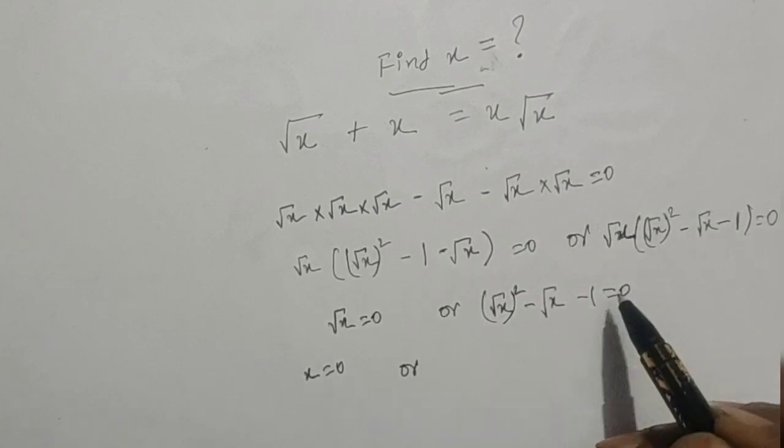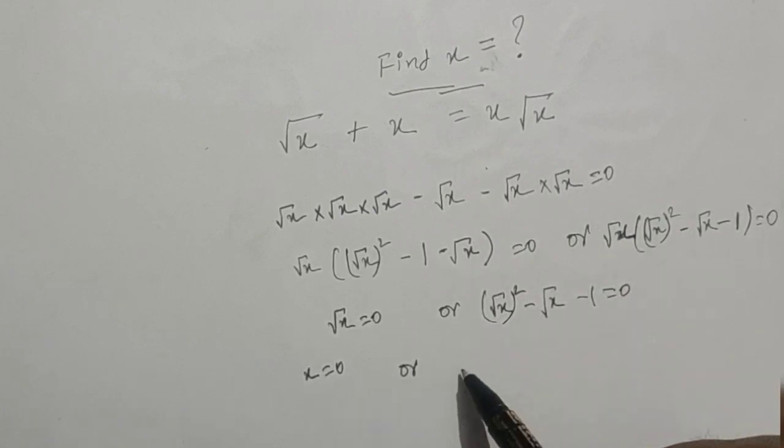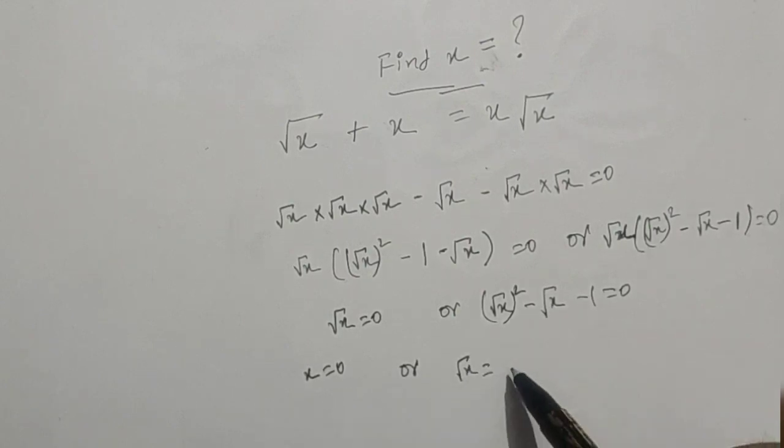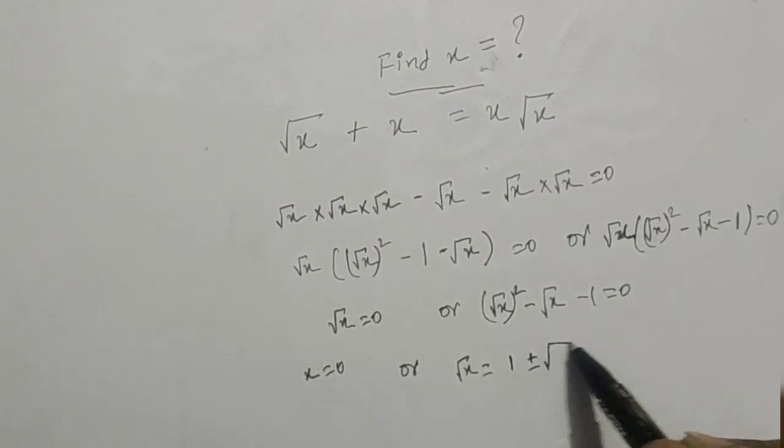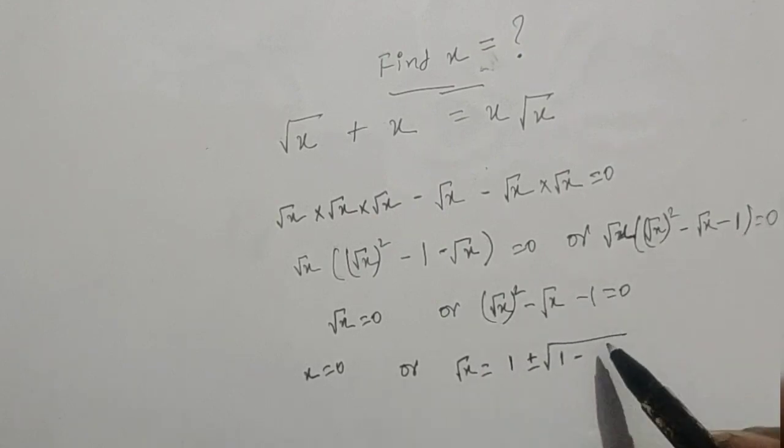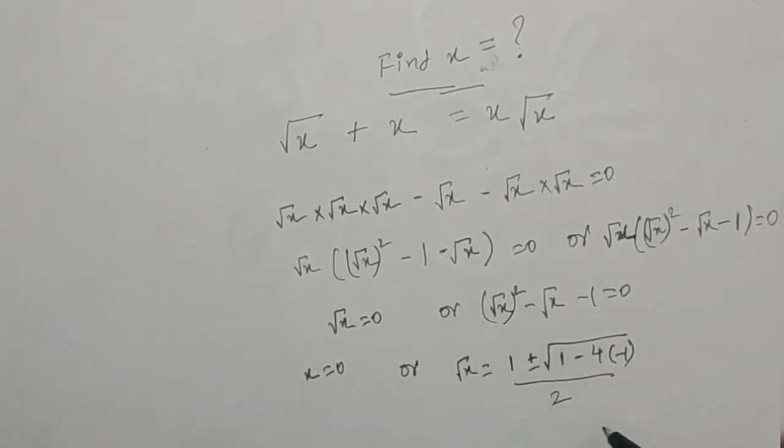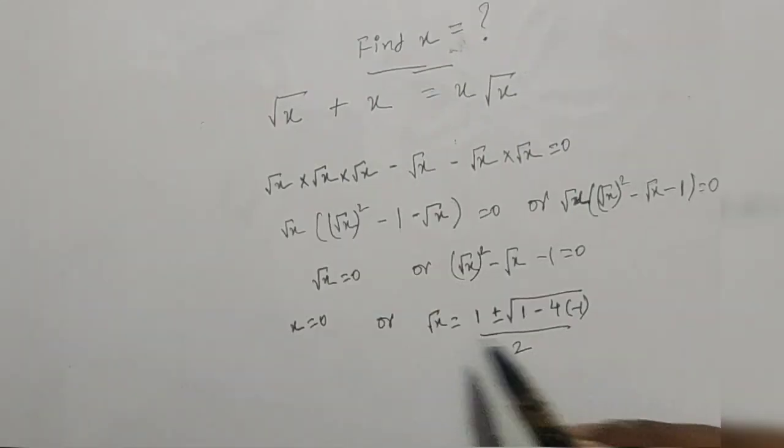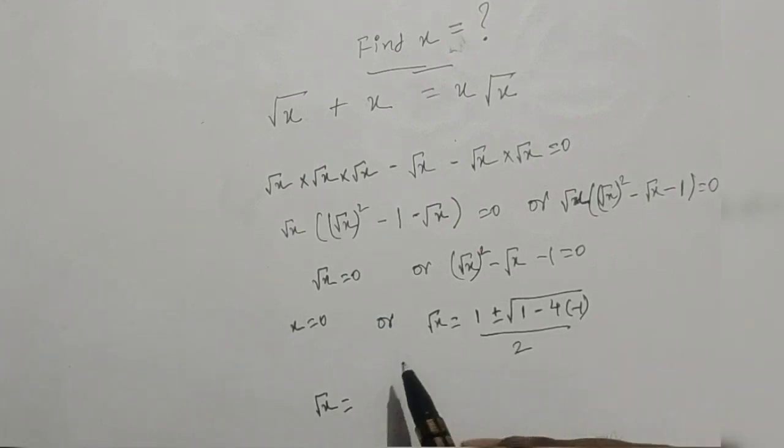Or here to find the roots, we will use the formula minus b plus minus b squared minus 4ac over 2a. So root x equals 1 minus minus plus minus root of (b squared, 1, minus 4ac, which is 4 times minus 1) over 2. So root x equals 1 plus minus root 5 by 2.